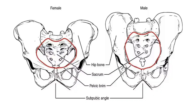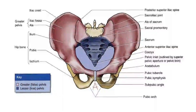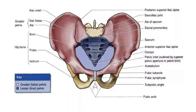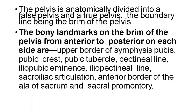This is a picture of a female pelvis as well as the male pelvis — you can notice the shape of the inlet. Pelvis is anatomically divided into a false pelvis and true pelvis, the boundary line being the brim of the pelvis.